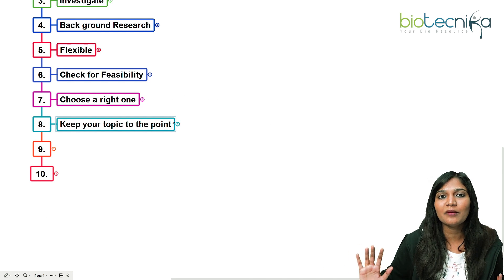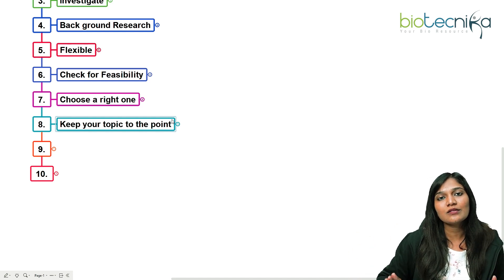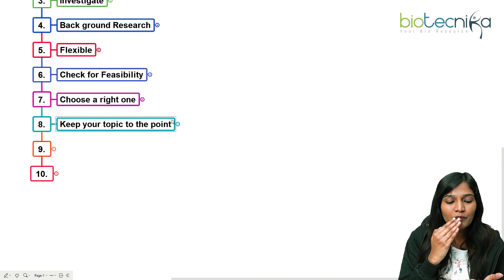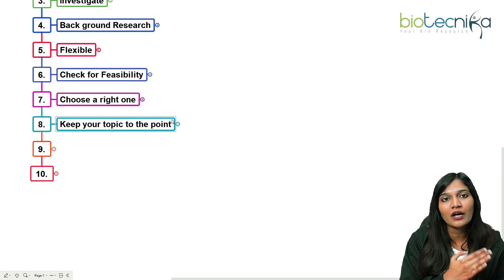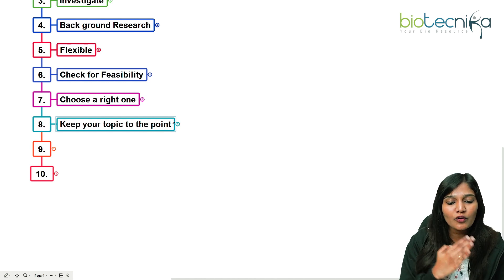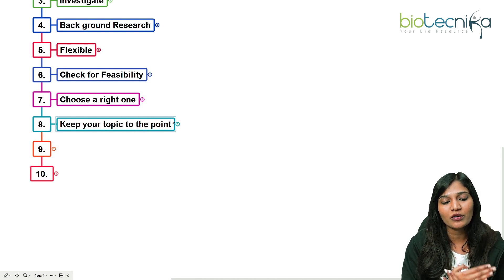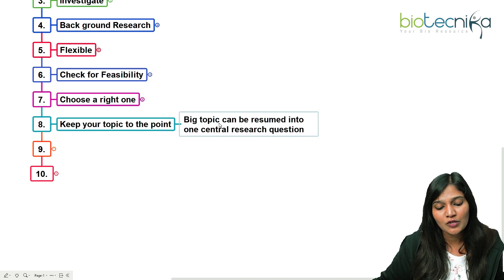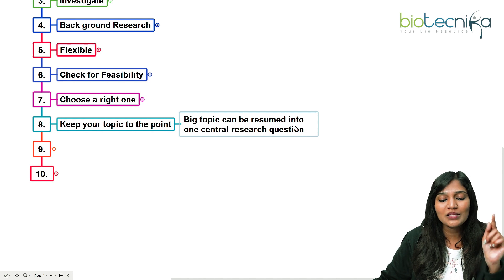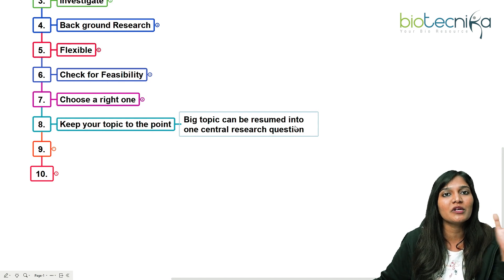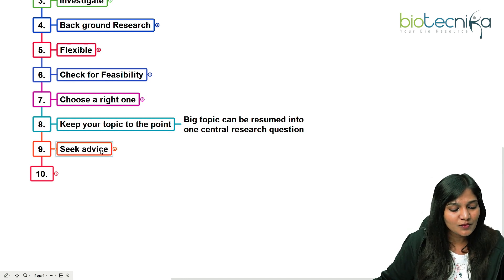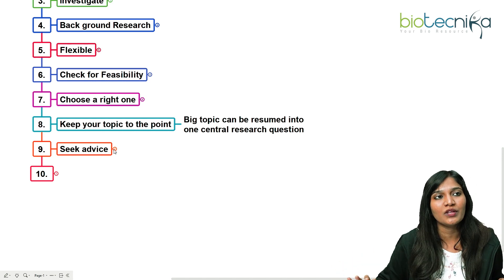The next tip is to keep your topic to the point. Saying 'breast cancer' is too broad. In breast cancer, what metabolism are you targeting? What substrate and reactant? What drug will you use to treat it? How are you going to block cancer multiplication or replication? Keep everything to the point. A big topic should be narrowed down to one central research question — it's not 'I'm going to do research in breast cancer,' but rather what specific question you are going to ask in that field.